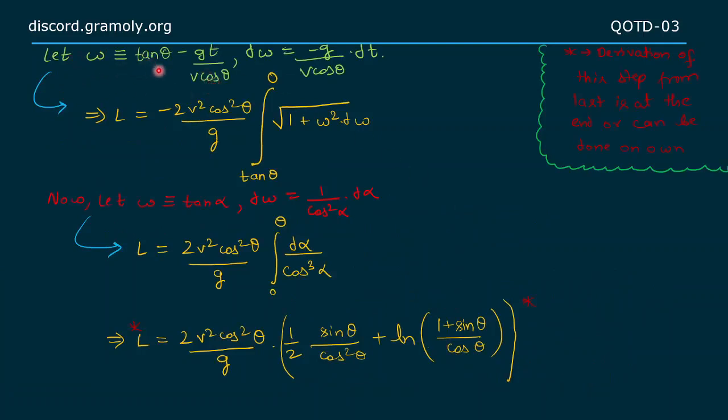Moving further, making a substitution of w as tan θ minus gt upon v cos θ, we get by differentiating dw as minus g upon v cos θ times dt. Using this value in the length of trajectory, we get minus 2v² cos² θ upon g times integration of root under 1 plus w² times dw from tan θ to 0.